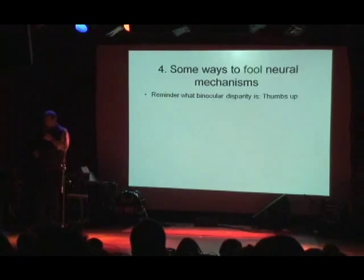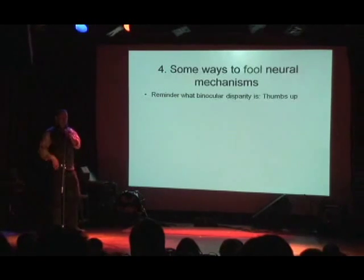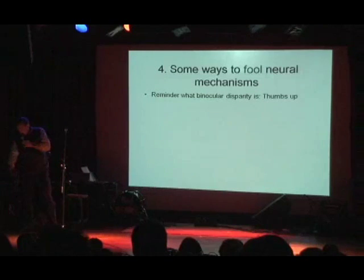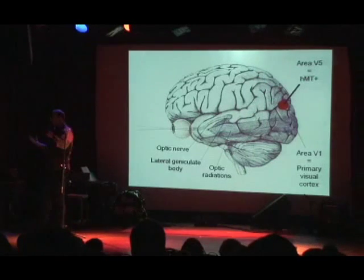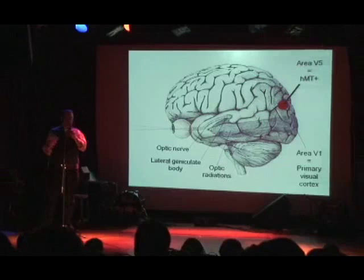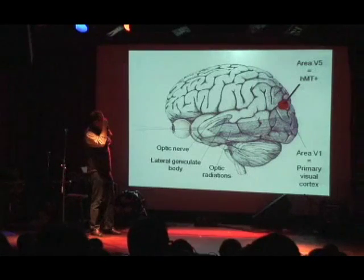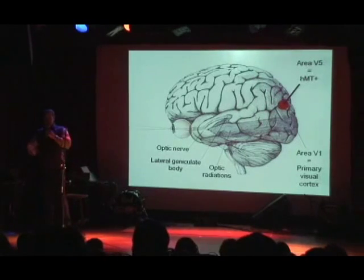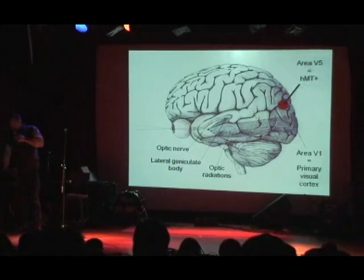Let's do a little reminder about what binocular disparity is, because we're going to look at some ways to fool the neural mechanisms that are present in V1 and MT — human MT+. This area is called V5 in the human. MT is a name it got in the macaque brain — it stands for mediotemporal sulcus in the macaque. It has gotten the name 'human MT' because it does the corresponding thing in the human brain, but it's not actually an anatomically accurate descriptor in humans, though people still call it human MT.